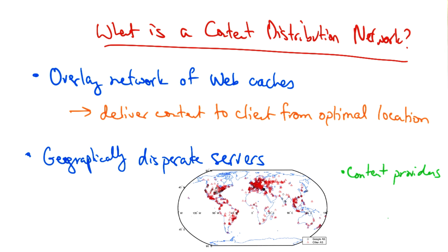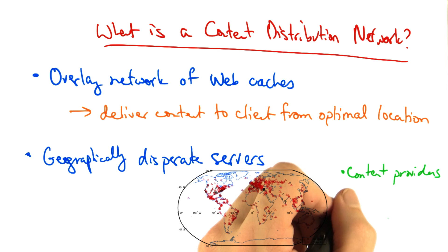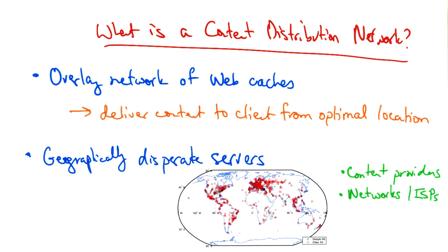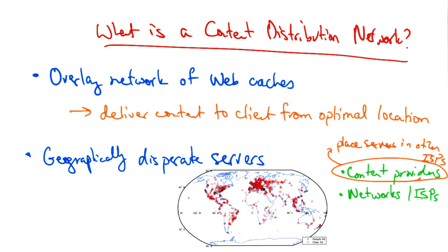Some CDNs are owned by content providers, such as Google, and others are owned and operated by networks, such as Level 3, Limelight, and AT&T. Still others, such as Akamai, operate independently. Non-network CDNs, such as Akamai and Google, can typically place servers in other autonomous systems or ISPs.